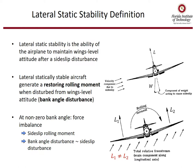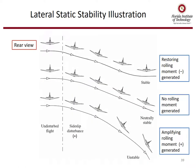Lateral static stability is the ability of the airplane to maintain wings-level attitude after a disturbance in sideslip. A laterally statically stable aircraft generates a restoring rolling moment when disturbed from wings-level attitude — in other words, a bank angle disturbance. A stable aircraft will generate a rolling moment to bring the wing back to wings level; a neutrally stable aircraft stays at the new bank angle; and an unstable aircraft will continue to roll off.